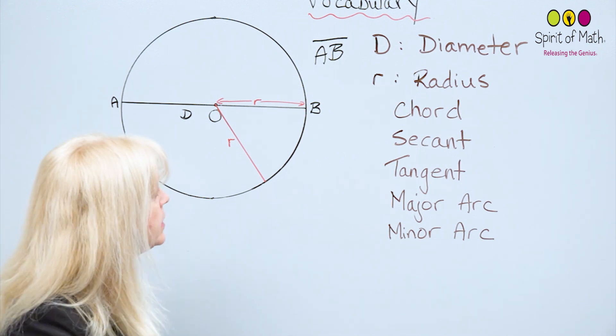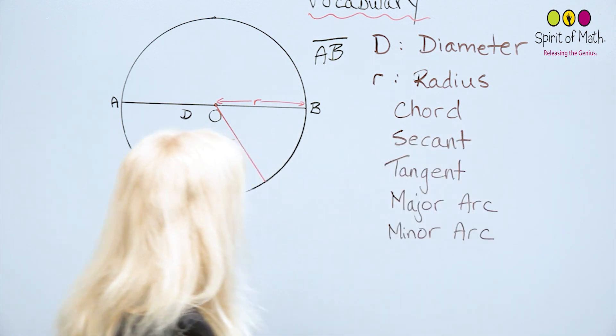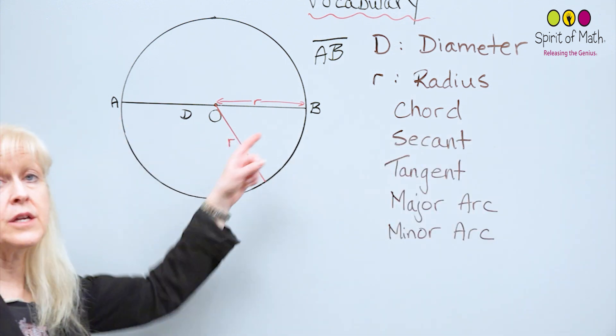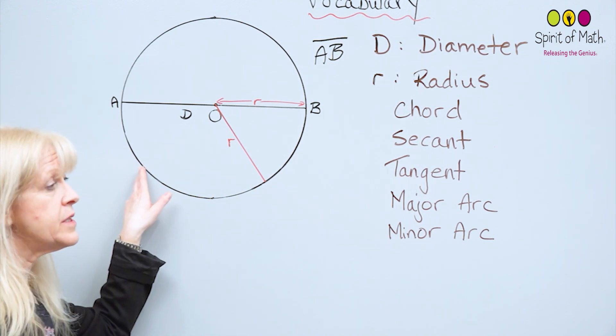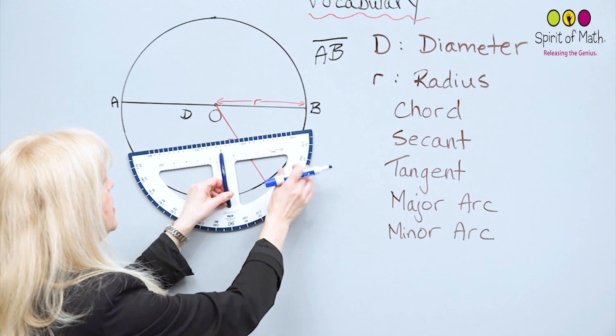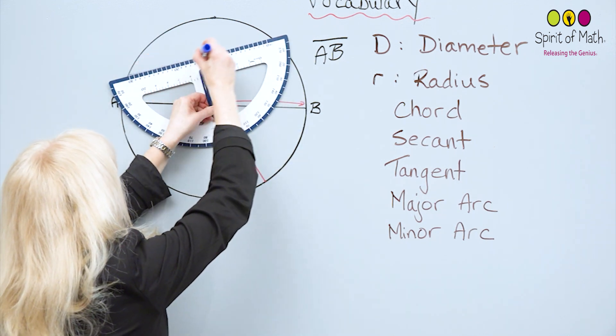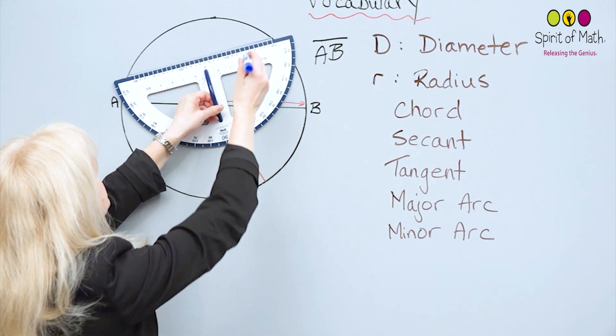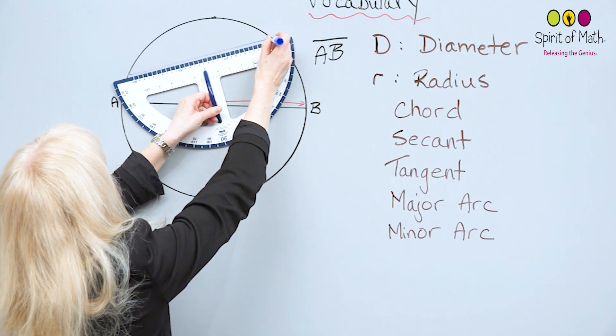Now, the next thing that is stated here is the chord. A chord is an interesting one because AB is actually a chord. Basically, a chord goes from one side of the circumference to the other side, but it doesn't have to go through the center. For example, let's just make a chord up here. This is considered a chord.